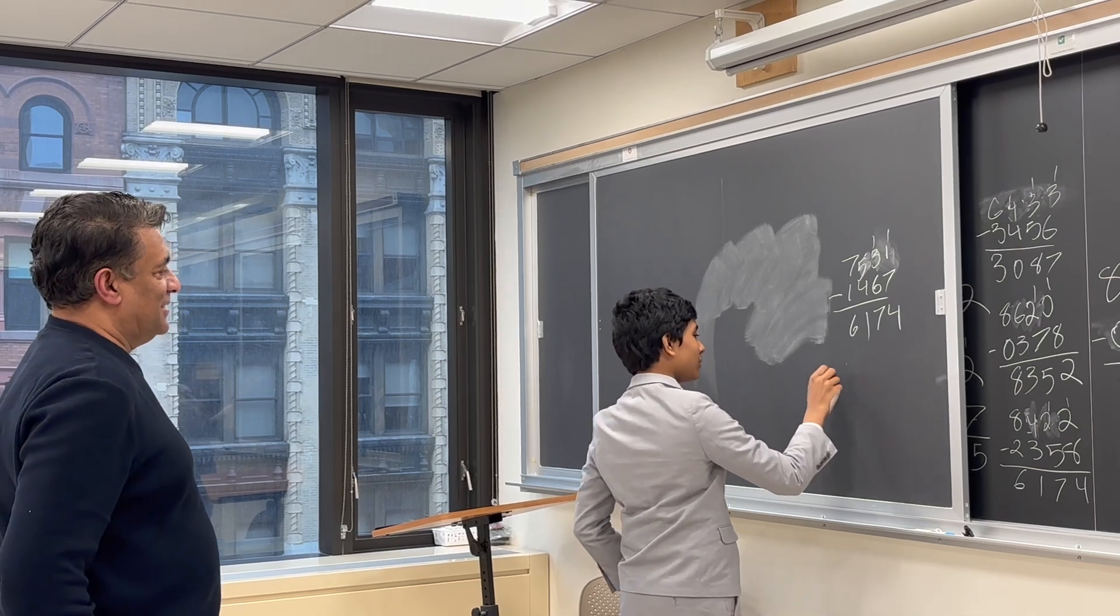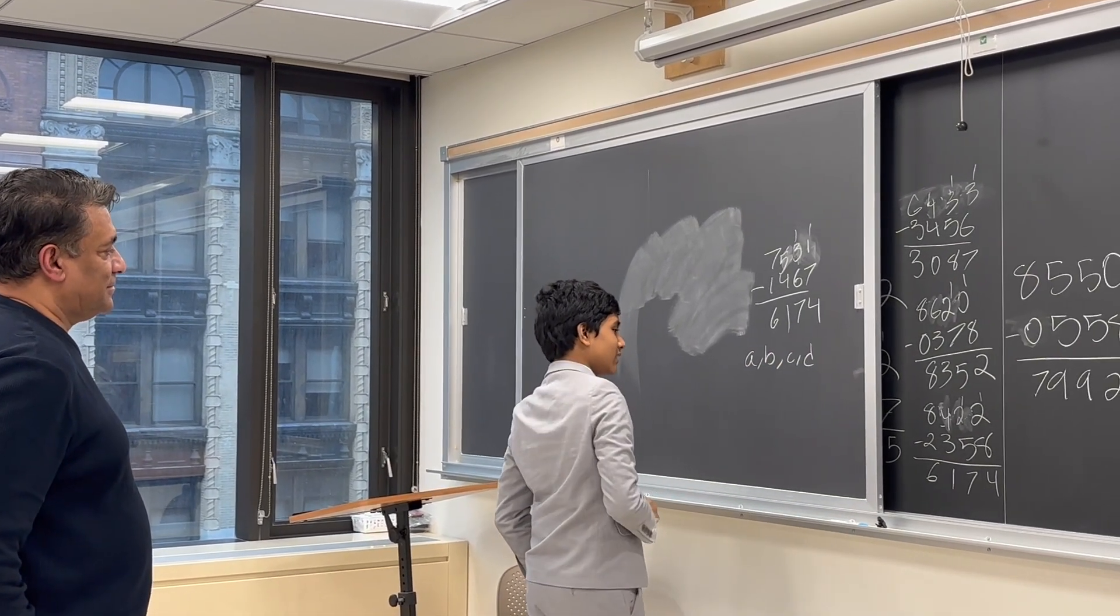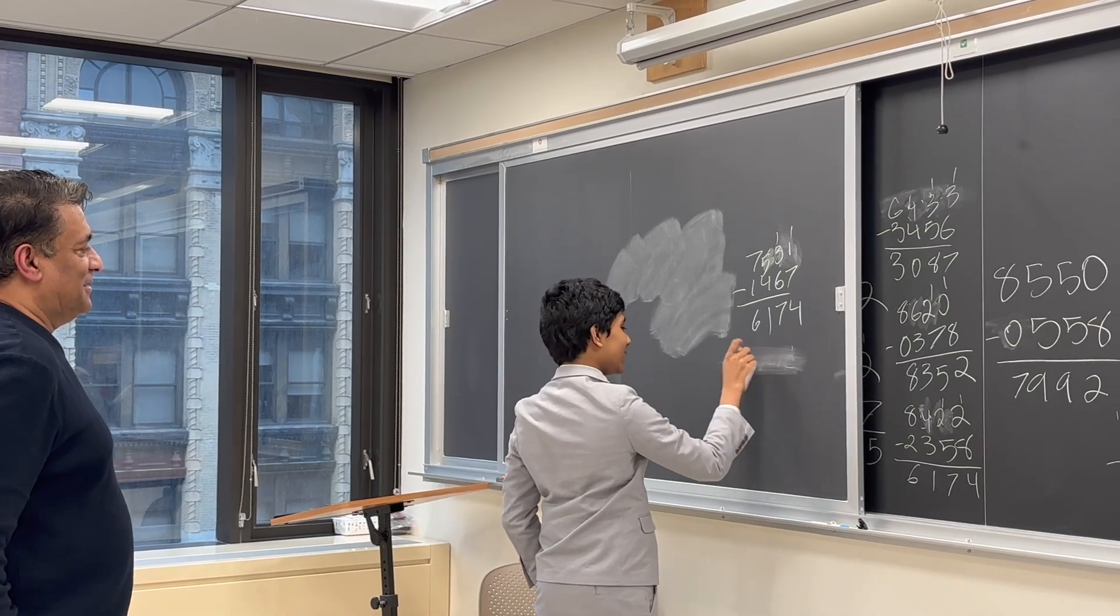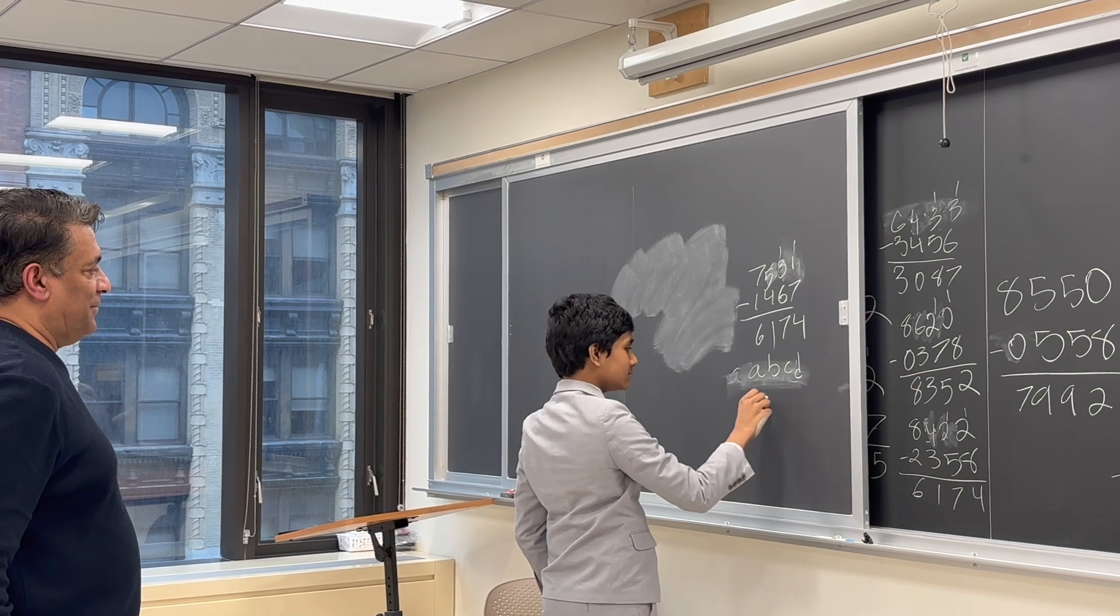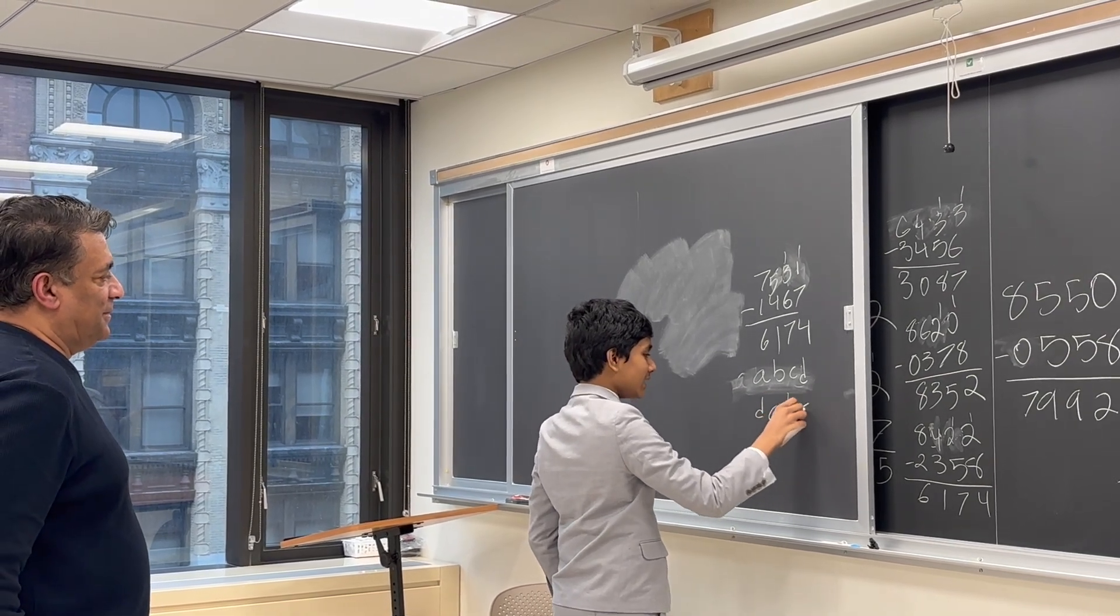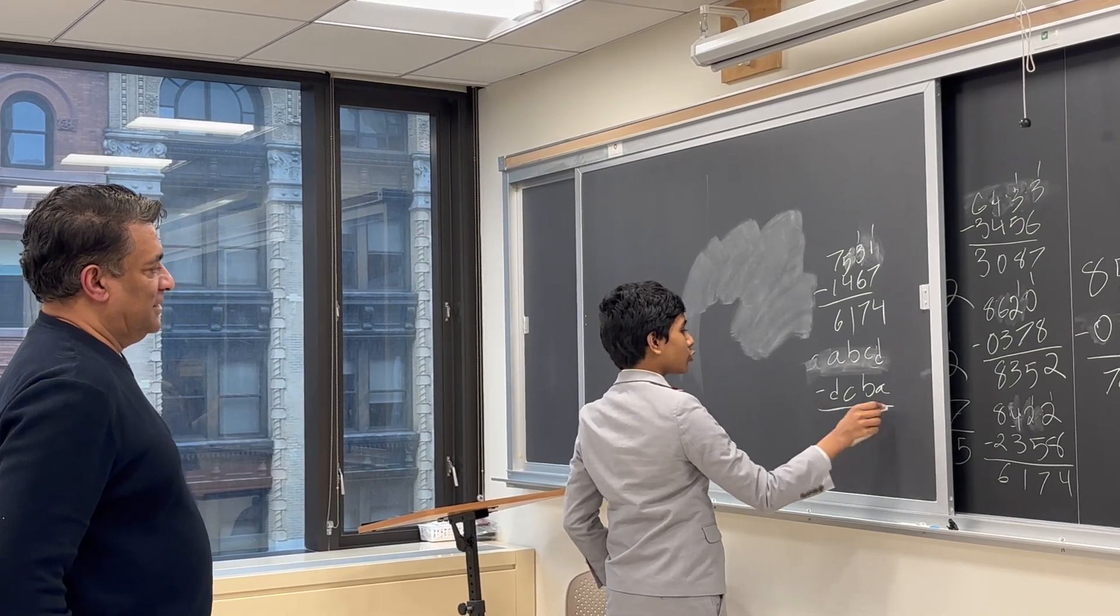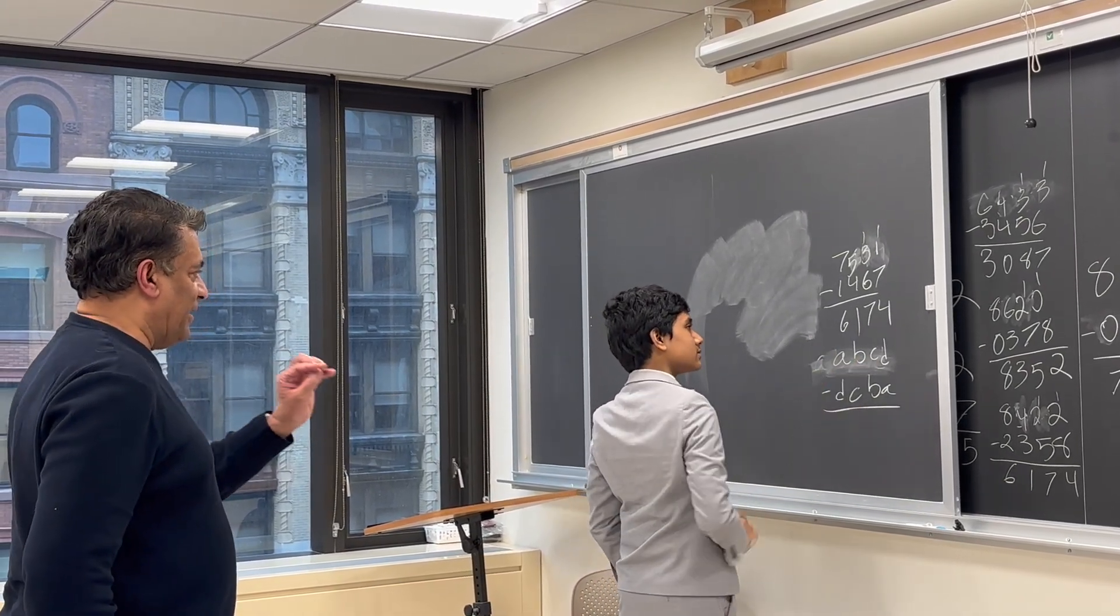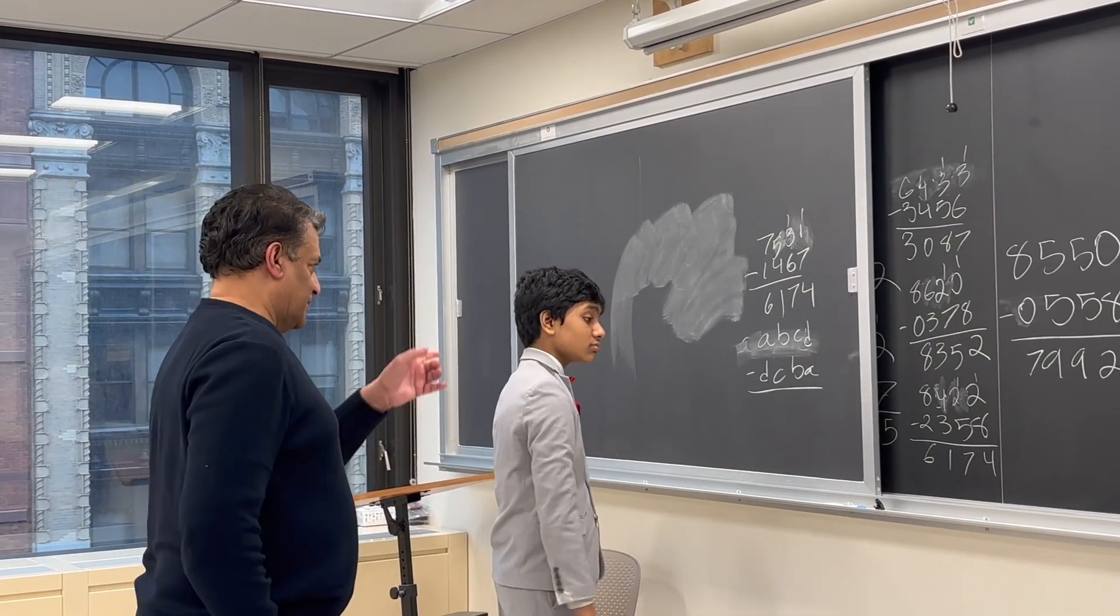So this is the kind of number where if you take a, b, c, and d, if you arrange the numbers a, b, c, d and then d, c, b, a in increasing order, then it's going to give you some rearrangement of a, b, c, and d. And no matter how you do this, you will always end up with 6174.